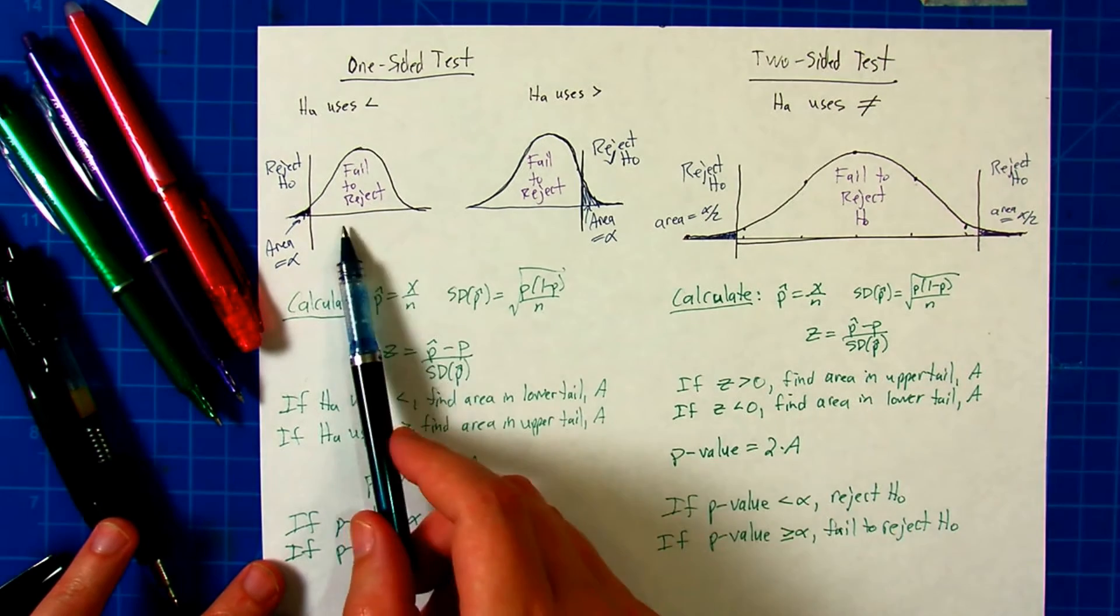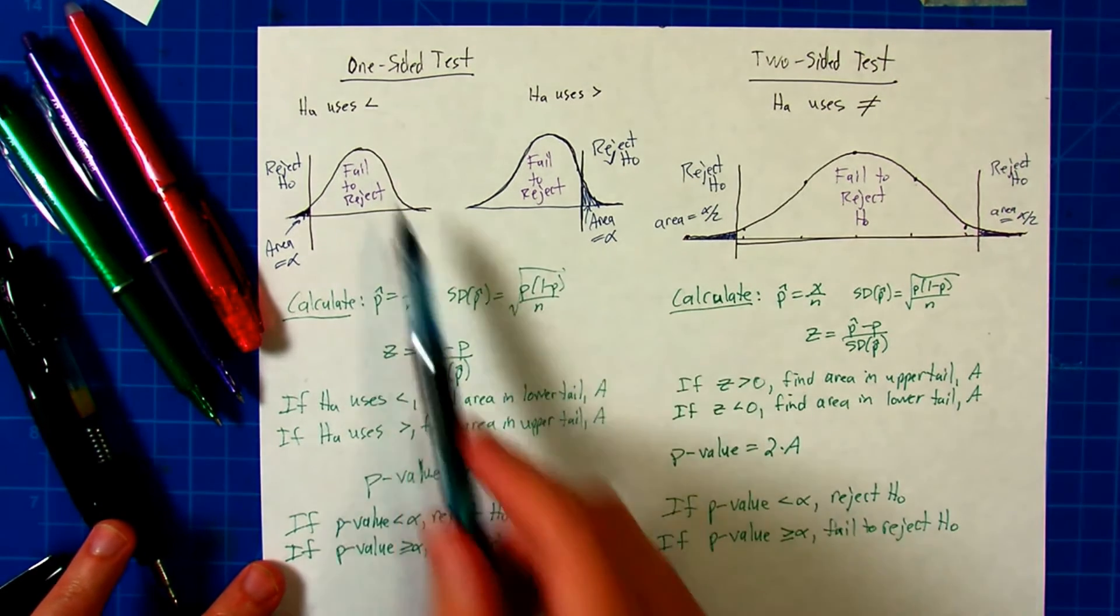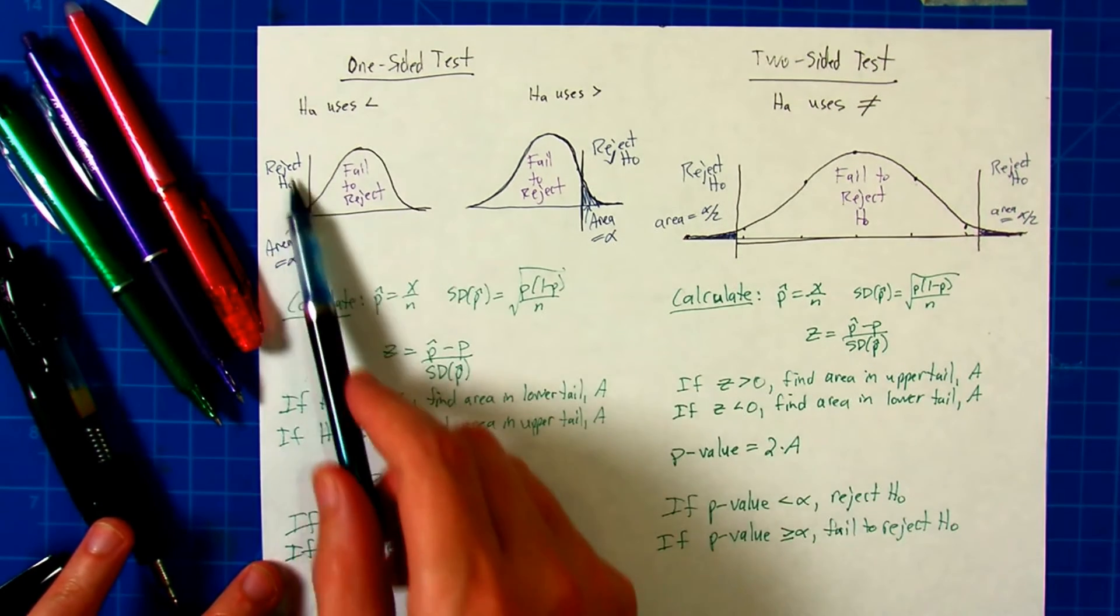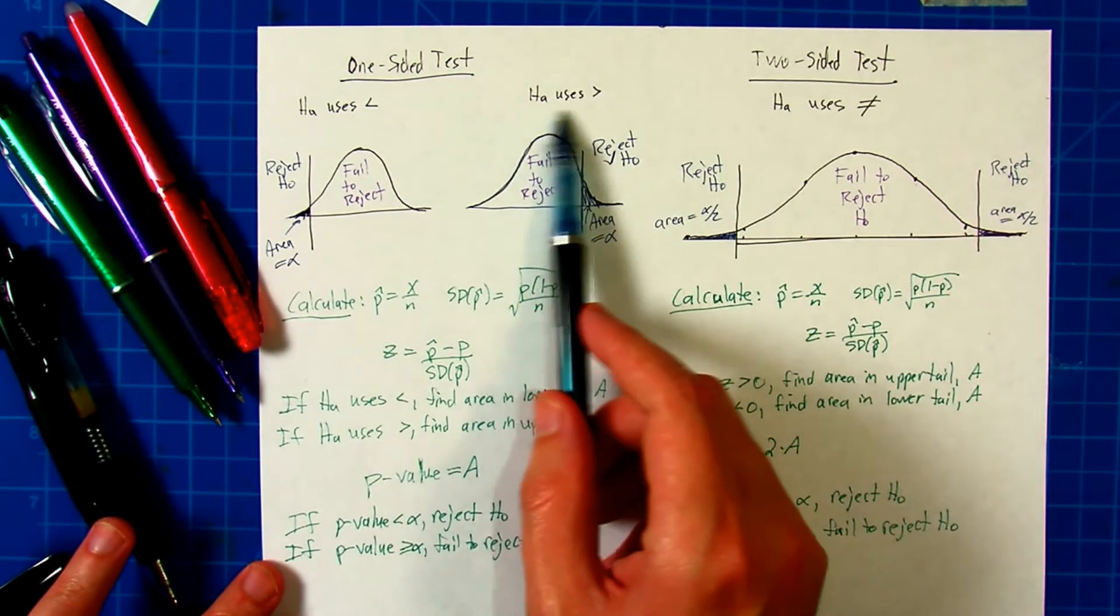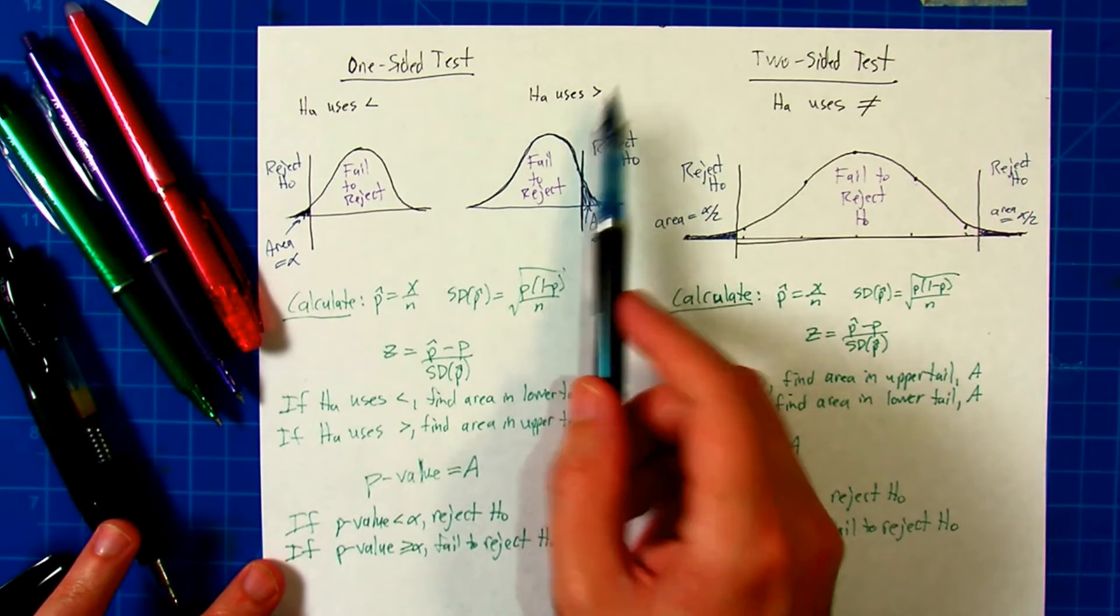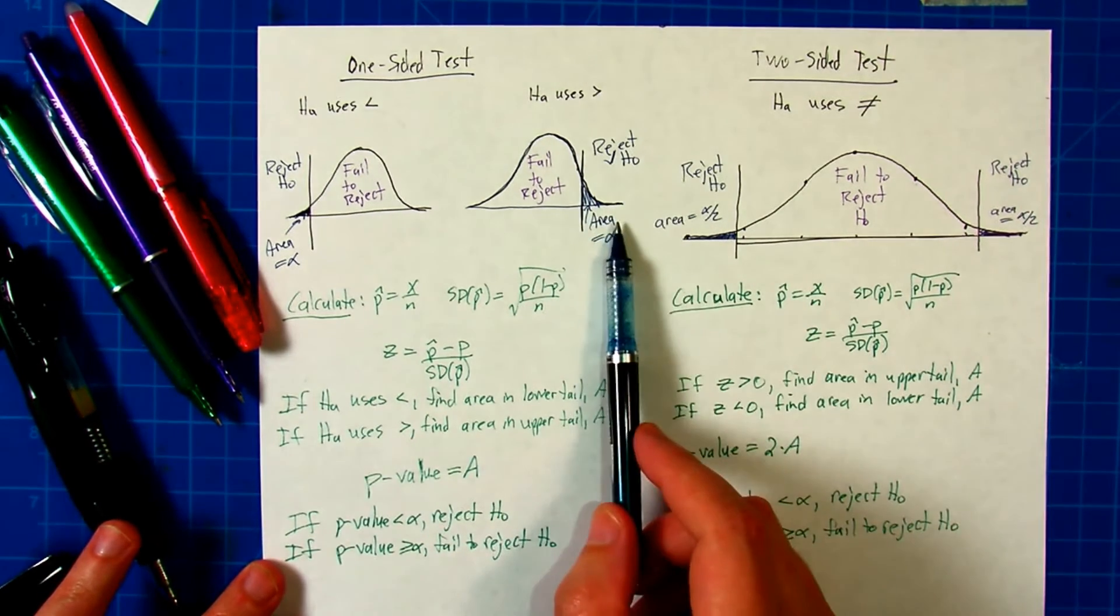The pictures with my amazingly drawn normal models that go with this are: if it uses less than, the rejection region is in the bottom of the normal curve. If the alternate hypothesis uses greater than, the rejection region is in the upper part of the curve.